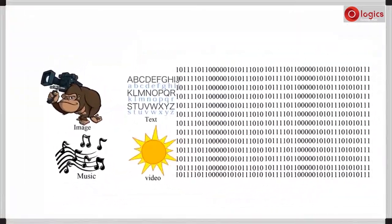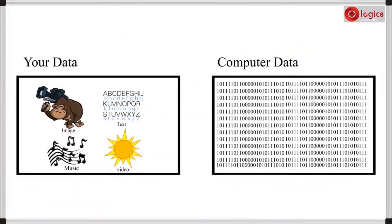This is your data — it means human-understandable. This is computer data — it means computer-understandable. As we know, the computer understands binary language only, that is zeros and ones. Let us see in detail why the computer understands only zeros and ones.